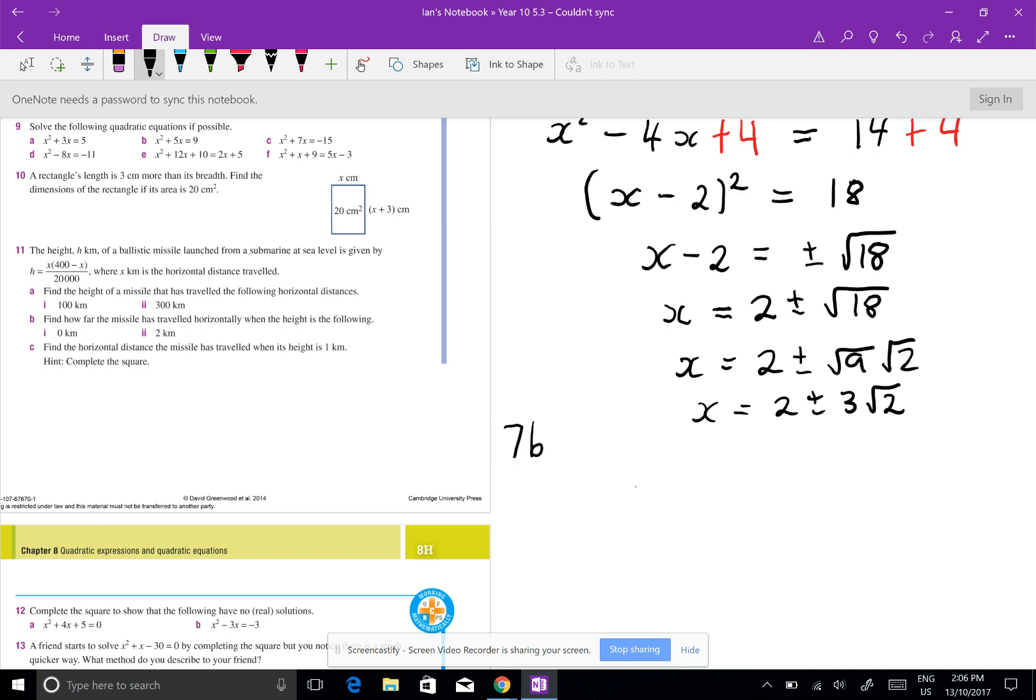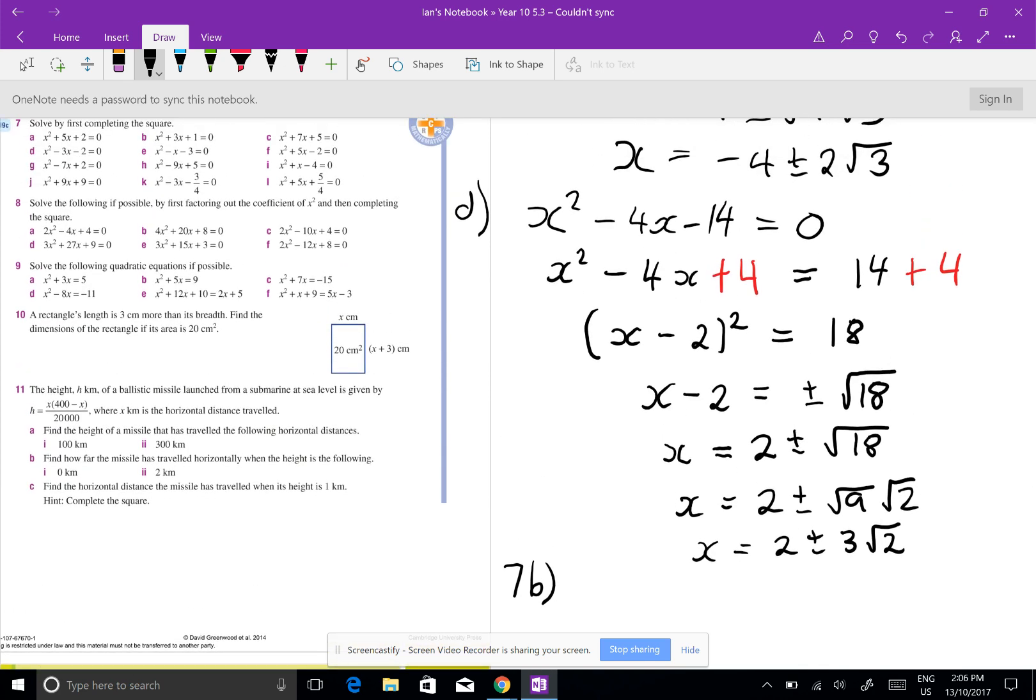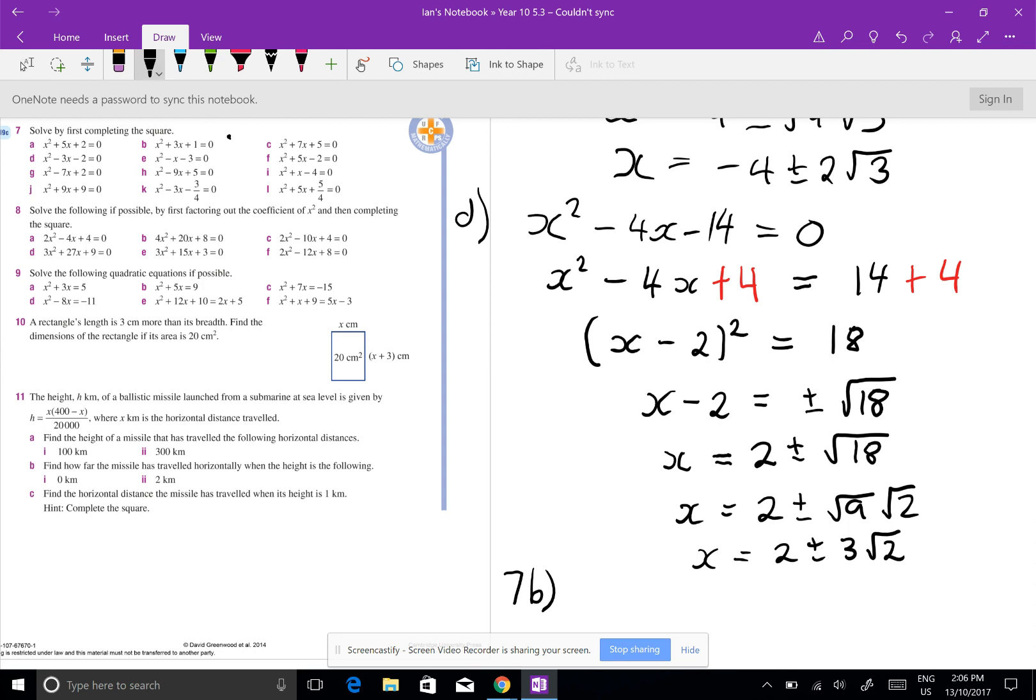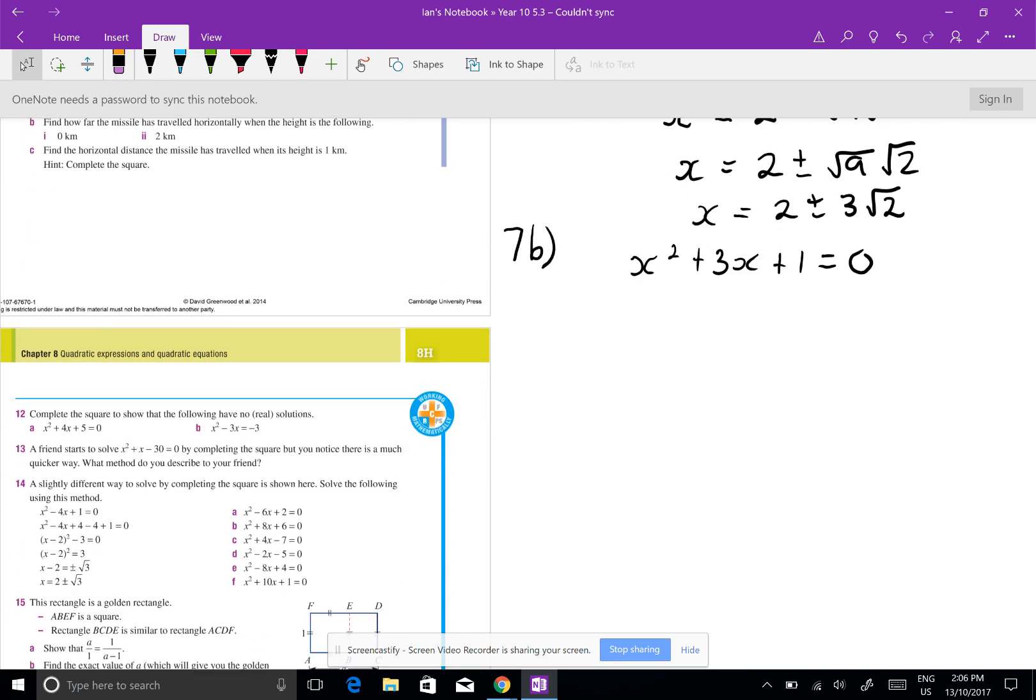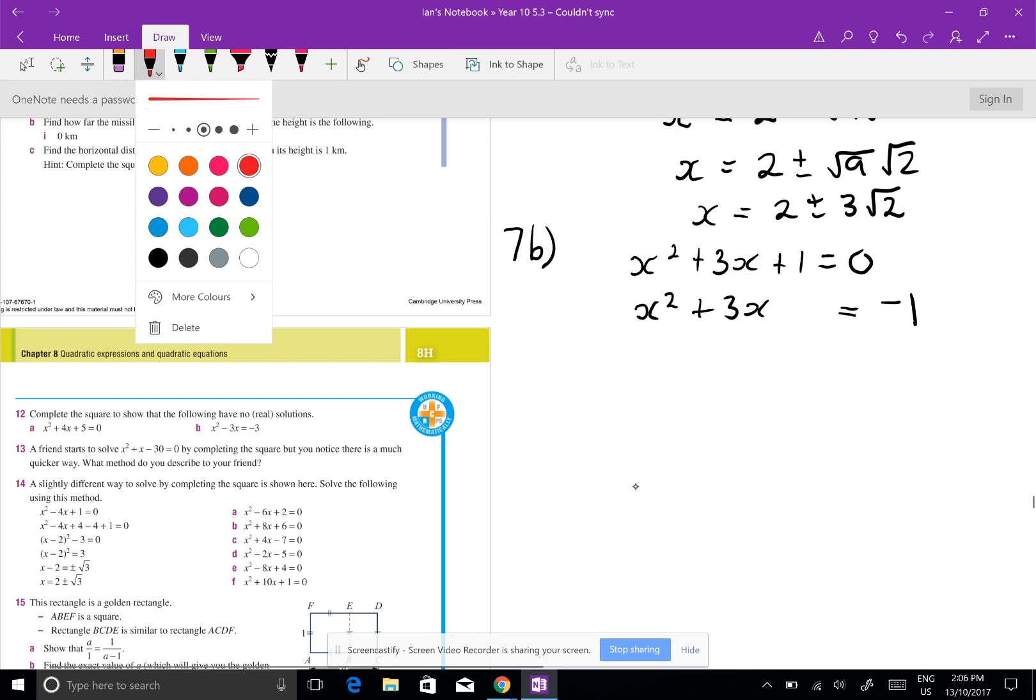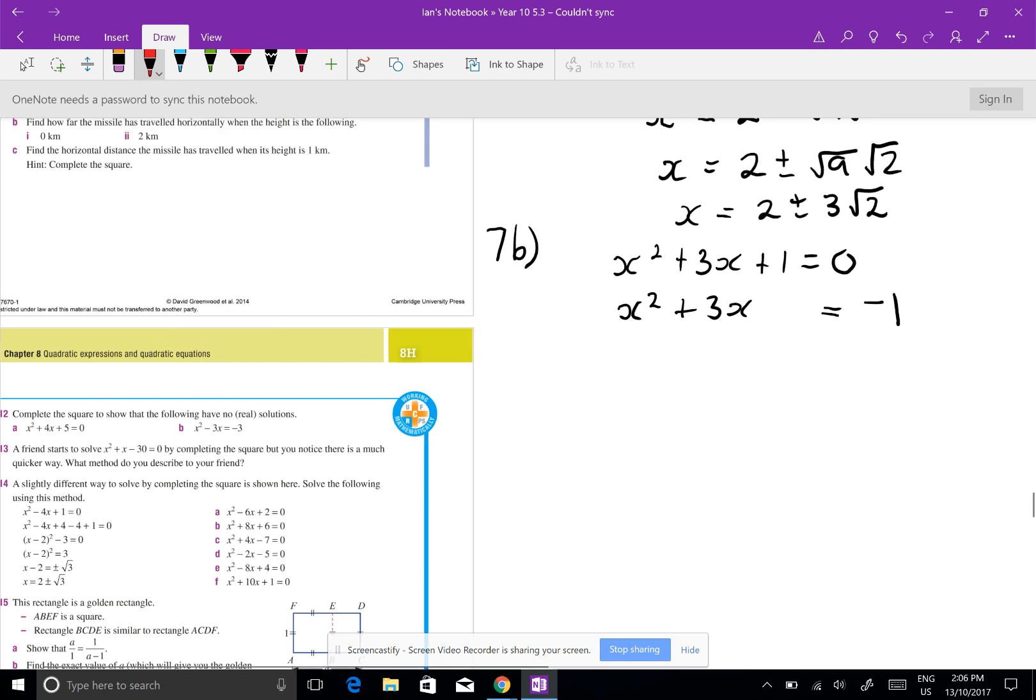So 7b, the equation is x squared plus 3x plus 1 equals 0. Well we're going to do the same thing, we're going to subtract the 1. So x squared plus 3x equals negative 1. And I am going to halve and square this number here.